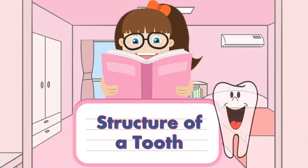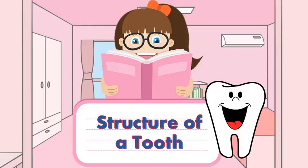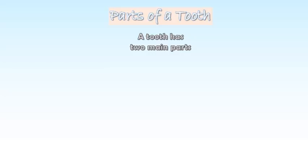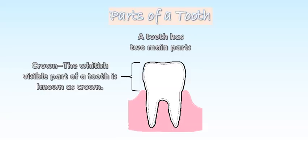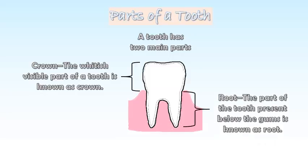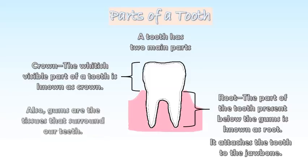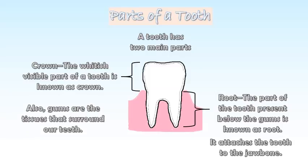Let us learn about the structure of a tooth. A tooth has two main parts. Crown — the whitish visible part of a tooth is known as crown. Root — the part of the tooth present below the gums is known as root. It attaches the tooth to the jawbone. Also, gums are the tissues that surround our teeth.